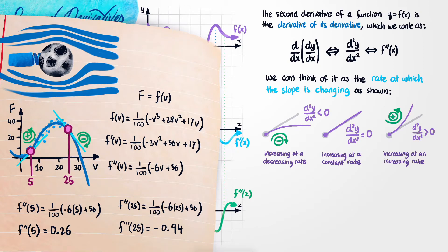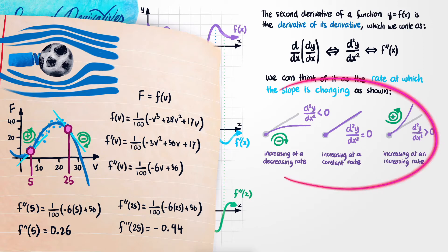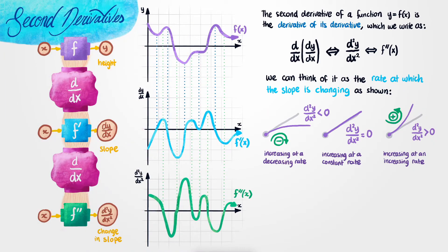If you'd like to, you can check some other points as well. For example, if you tried v equals 15, you'd notice that it's increasing, but it's going to be doing so at a decreasing rate. I hope the two examples I've shown you are enough proof that this is a really great way to think about the second derivative. With this, we've actually completed our example.